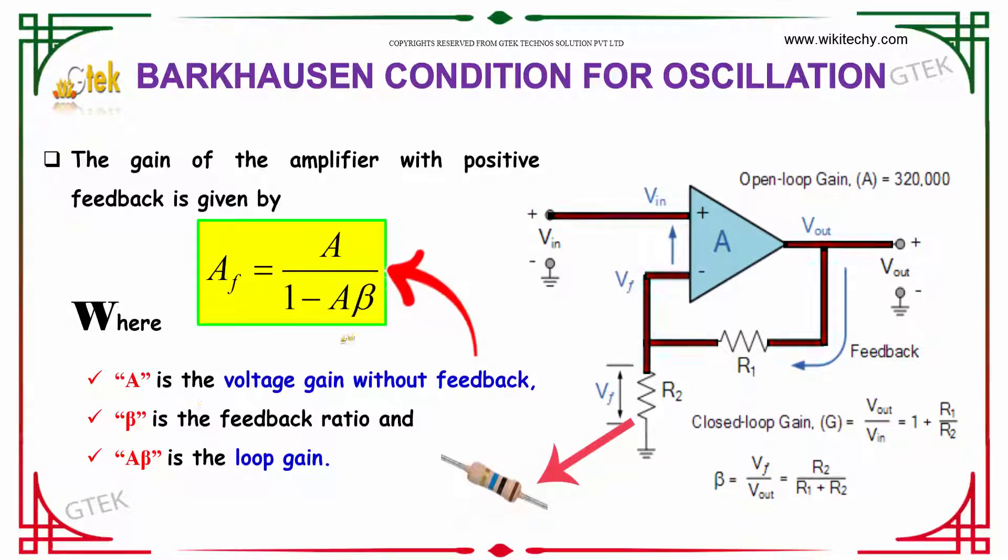Where A is the voltage gain without feedback and beta is the feedback ratio. A beta is called the loop gain.